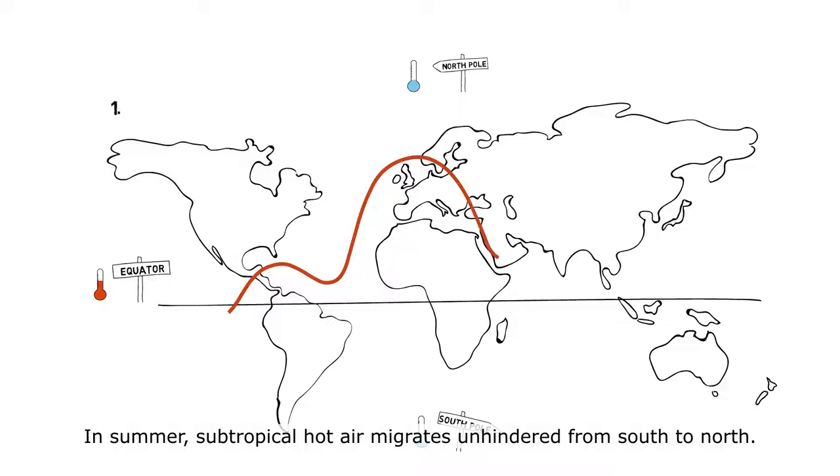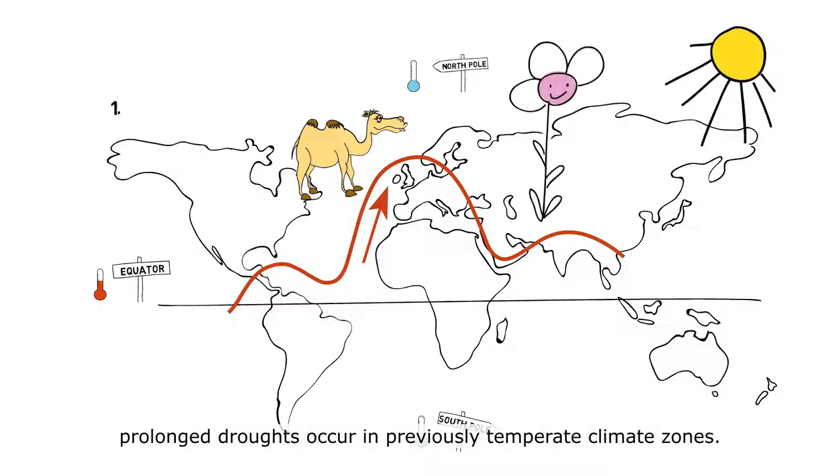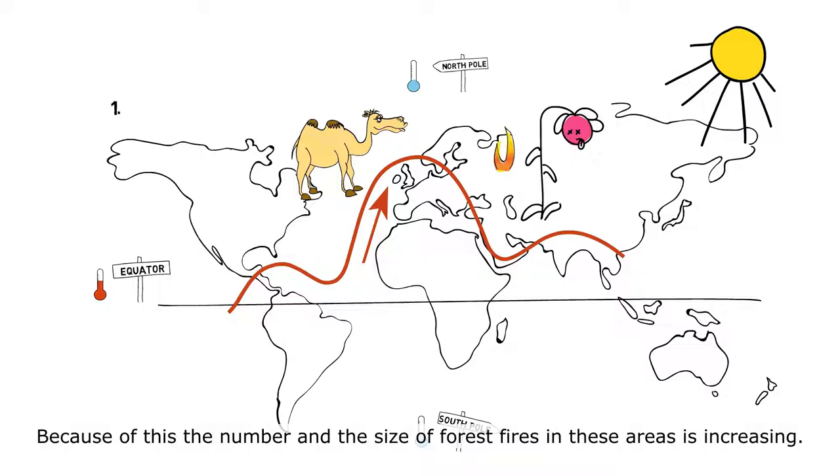In summer, subtropical hot air migrates unhindered from south to north. As a result, increasingly extreme heat waves and prolonged droughts occur in previously temperate climate zones. Because of this, the number and size of forest fires in these areas is increasing.